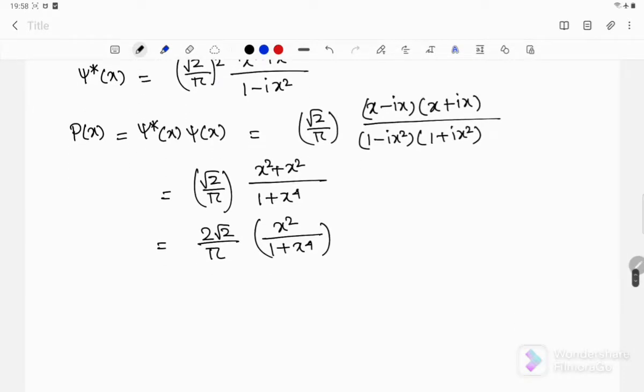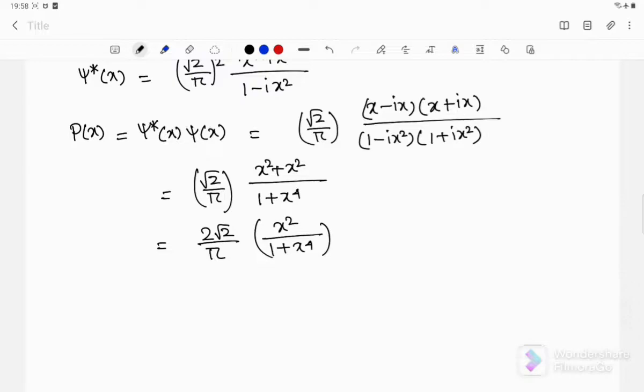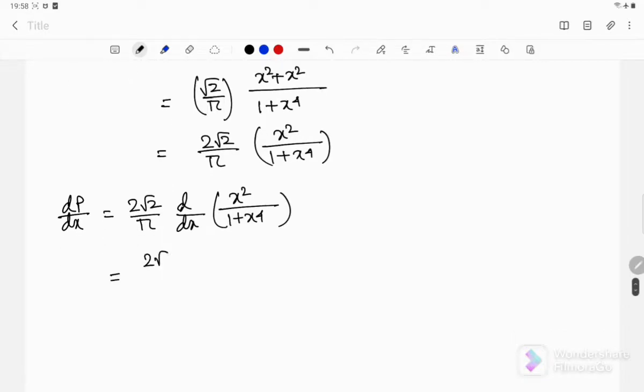At the position where the particle is most likely to be found, the probability density should be maximum. So if we want to find the maximum probability density, we have to take the derivative. We have to calculate this. So let's do it.